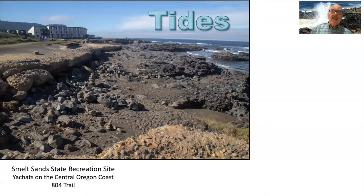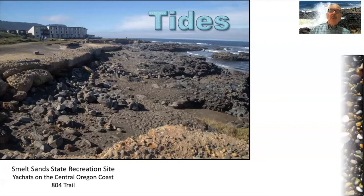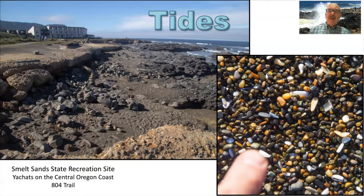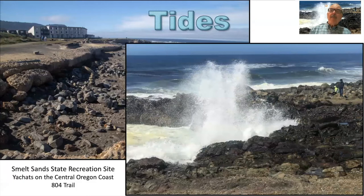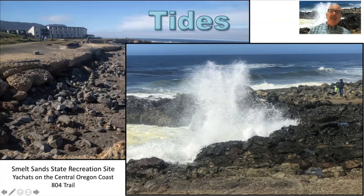We can walk down toward the water and maybe look for agates in the gravel on the beach. Other beaches are sandy, but in this case we know that sometimes it's low water, but the same beach you come back to and the water is high. The waves are breaking right on the rocks, on the ridge of hard basalt rock that we have in the Yachats area, and we get waves crashing against the shoreline. So what causes this change in the water level? That's what we're going to talk about today.